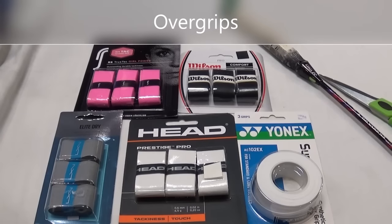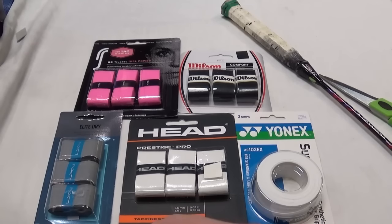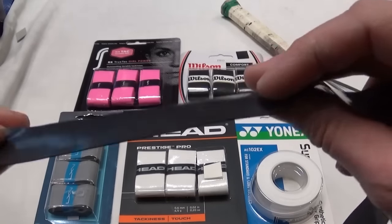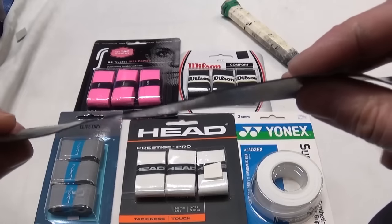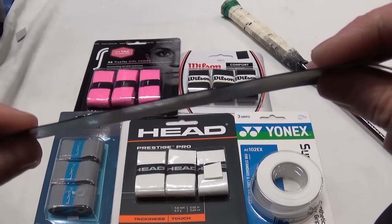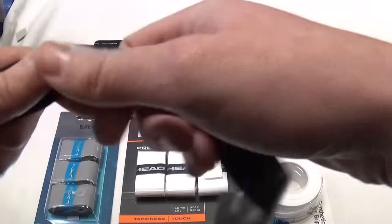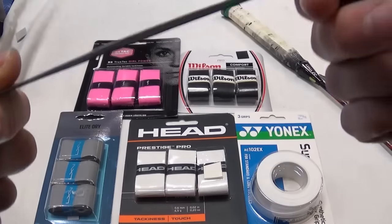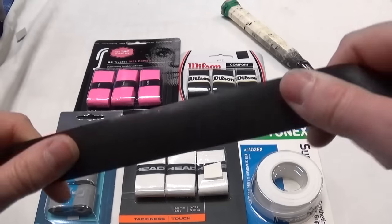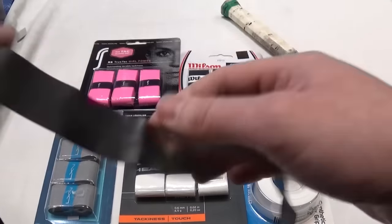Around the world probably the most popular grips for badminton are over grips. Now over grips differ from PU grips because they don't have a sticky surface on the back. They're very thin and they're basically just a surface for your badminton racket. They're quite versatile, there's lots of different things you can do with them.